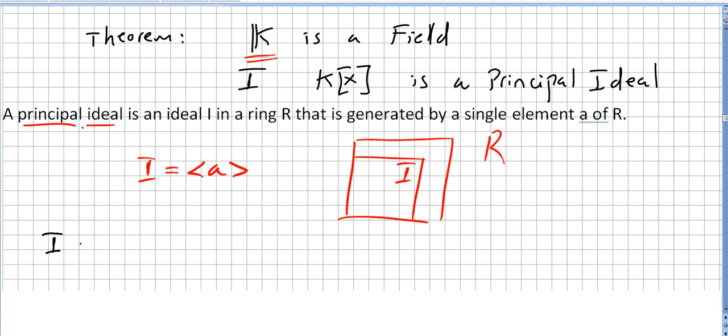If the ideal is not the set {0}, then we can say there is a monic polynomial that generates the ideal. So if K is a field, the ring of polynomials is a principal ideal, and if it is not {0}, then there will be a monic polynomial that generates the ideal.